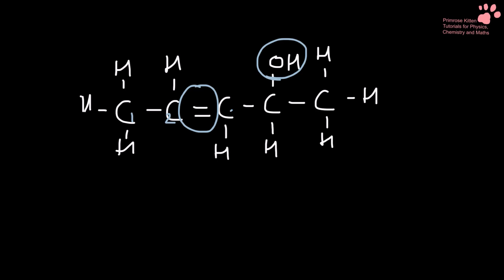So let's start by naming the alkene first. One, two, three, four, five. So this is pent-2-ene.